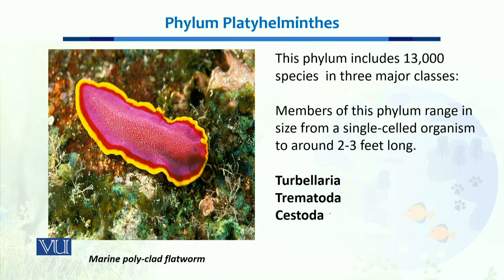Those 13,000 species are included in three major classes: Turbellaria, Trematoda, and Cestoda. The members of this phylum range in size from microscopic to as large as two to three feet long. You can see one organism in this diagram — this is a marine Platyhelminthes called polyclad flatworms, and you can see its body is dorso-ventrally compressed.